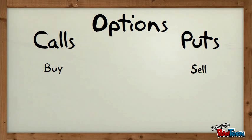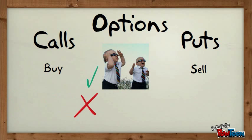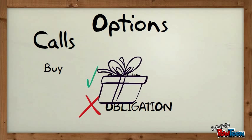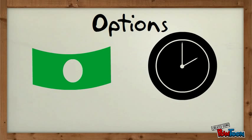Options are of two types: calls and puts. Calls give the buyer the right but not the obligation to buy a given quantity of the underlying asset at a given price on or before a given future date.